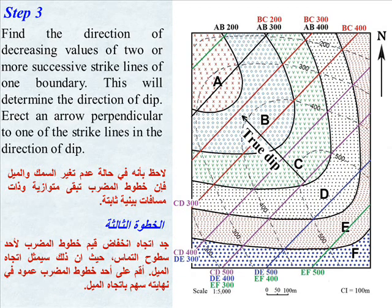Step 3. Find the direction of decreasing values of two or more successive strike lines of one boundary. This will determine the direction of dip. Erect an arrow perpendicular to one of the strike lines in the direction of dip.